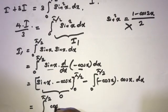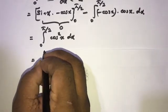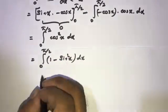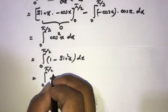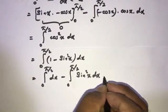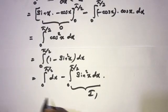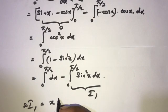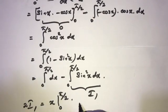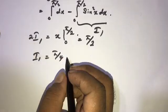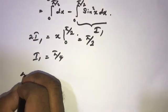Now the boundary term equals 0. We have minus (integral from 0 to 5π/2 of cosine x times cos x), which is cosine squared x dx. We can write cosine squared x as 1 minus sine squared x dx, giving the integral from 0 to 5π/2 of dx minus the integral from 0 to 5π/2 of sine squared x dx, and we know that last integral equals I₁. So 2I₁ equals the integral of dx from 0 to 5π/2, which equals 5π/2. Therefore I₁ equals 5π/4.